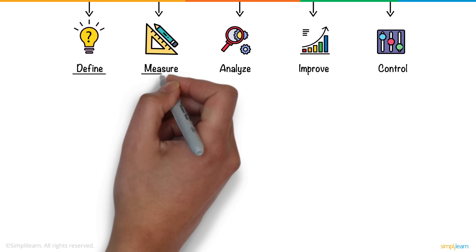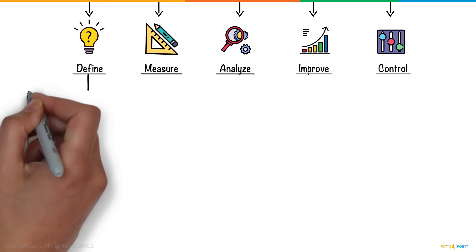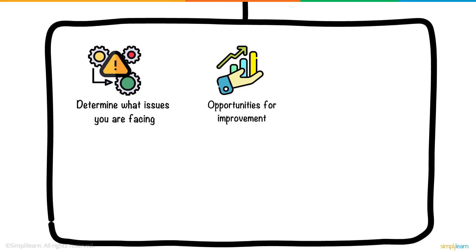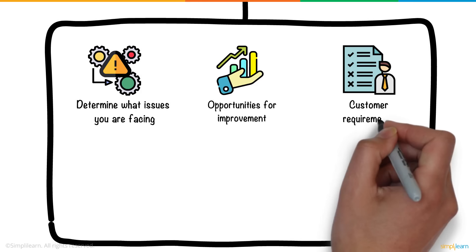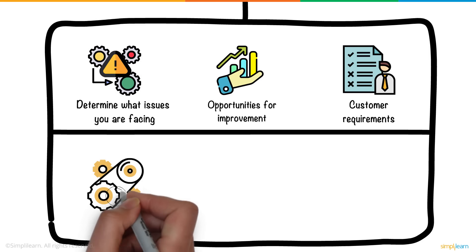Let's have a look at each of these stages individually and how it relates to your earlier problem. In the Define phase, you determine what issues you're facing, what your opportunities for improvement are, and what the customer requires of you. Here, you look at the process as a whole and determine the issues with the manufacturing process.